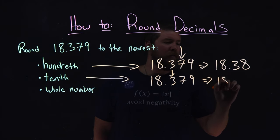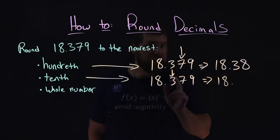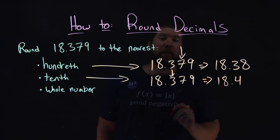And so, we rewrite this number as 18 point, but instead of the 3, we have a 4 going up by 1.